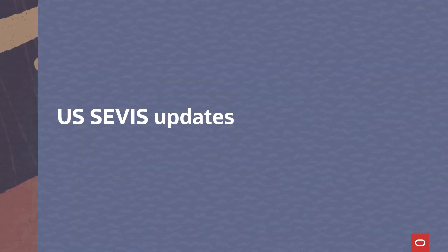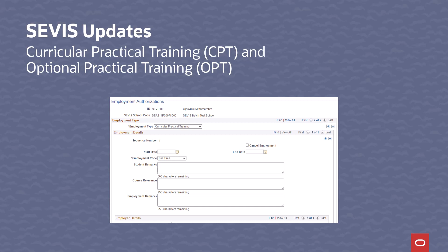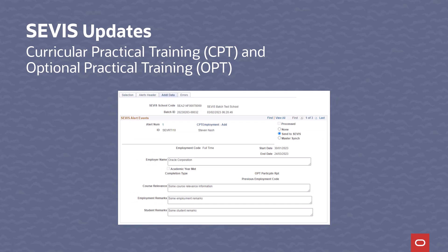US SEVIS Updates — Student and Exchange Visitor Program. For SEVIS support in the US, PUM 29 includes updates to the Employment Authorizations page for Curricular Practical Training (CPT) and Optional Practical Training (OPT). The remarks field is now employment remarks for both CPT and OPT. Student remarks are now included in CPT Employment Add Alert Events, and the existing remarks tag is updated to employment remarks in the XML. We also made label changes to the remarks field on the additional data and history detail F/M pages, and updated the SEVIS extract process to reflect the employment remarks and student remarks information.